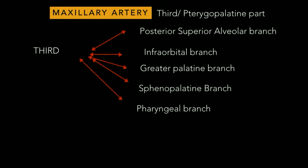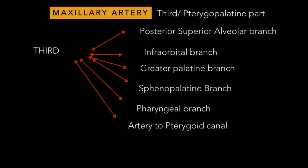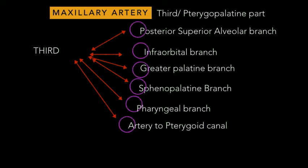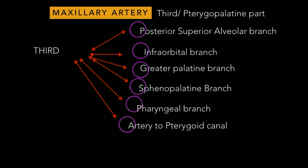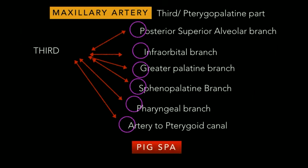Taking P from posterior superior alveolar, I from infraorbital, G from greater palatine, S from sphenopalatine, B from pharyngeal, and A from artery to pterygoid canal, we get the very easy mnemonic: 'Big Spa.' I hope this video has been beneficial and helps you remember the branches of the maxillary artery.